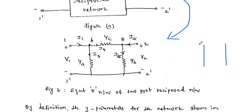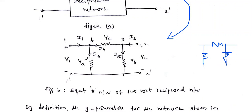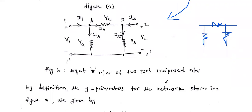Pi means three elements are connected in the shape of pi. One element is connected in one arm, one element in the middle, and one element in the other arm. These elements are Y-A, Y-B, and Y-C. Here, instead of impedance we are considering admittance — admittance is the reciprocal of impedance. This is the equivalent pi network of the two-port reciprocal network.